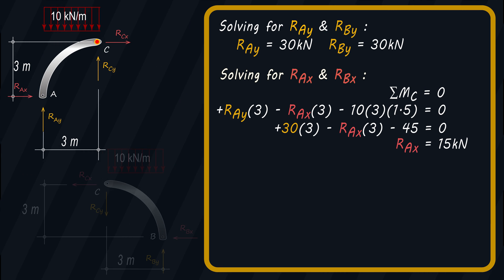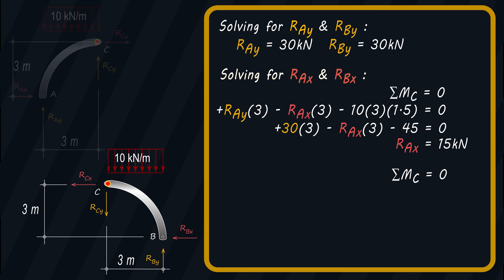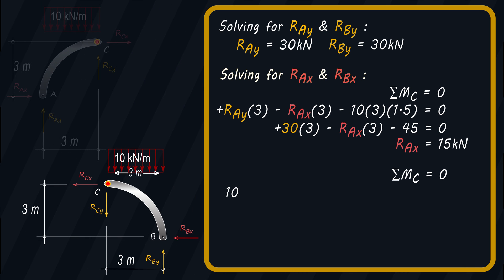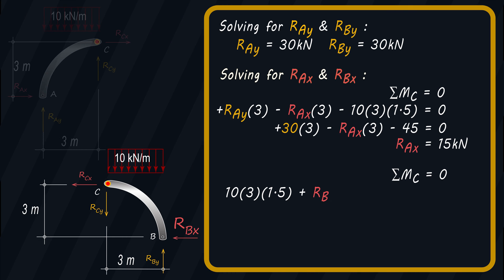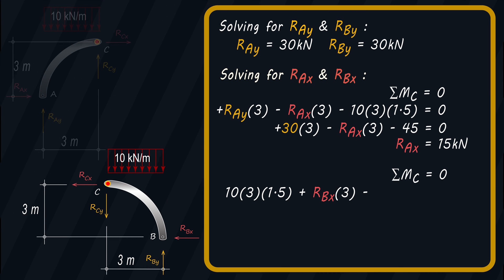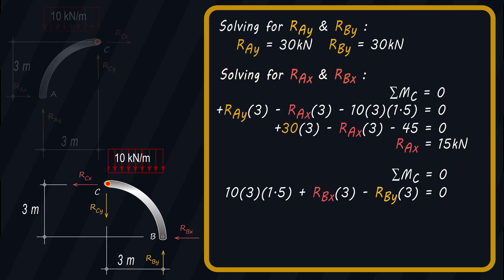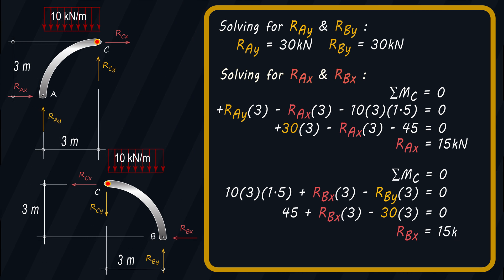Using the free body diagram for member BC, we'll sum the moment at point C, which should also be equal to zero, taking clockwise moment as positive. We have: 10 times 3 times 1.5 plus RBX times 3 minus RBY times 3 equals zero. Substituting the value of RBY, which is 30 kN, and solving for RBX, we get the result equal to 15 kN.